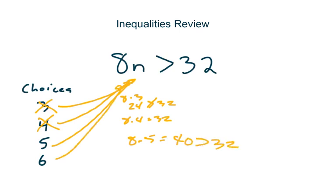Our last one to test is 6. 8 times 6 is of course 48, and 48 is greater than 32. Okay, let's look at another sample right here.